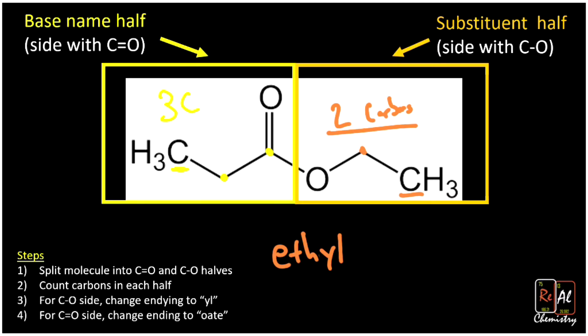And now on the left-hand side, we had three carbons and we're going to want to change the ending for that one to oate. So three carbons gives us propane. And we are going to drop the E and add oate. So it becomes propanoate.